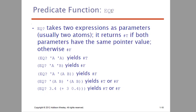Predicate function EQ is denoted by a question mark symbol. Basically it takes two expressions as parameters and returns true if both parameters yield the same pointer value, else it returns false. Here you can see a quote function with 'a' and another quote function with 'a', so both are equal and hence they yield true.